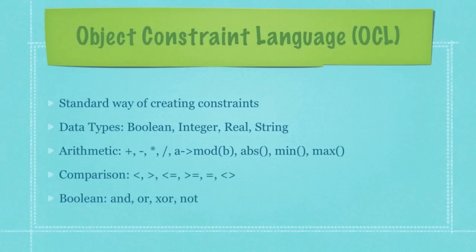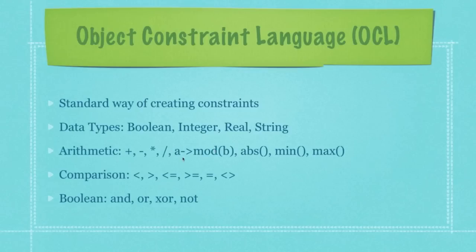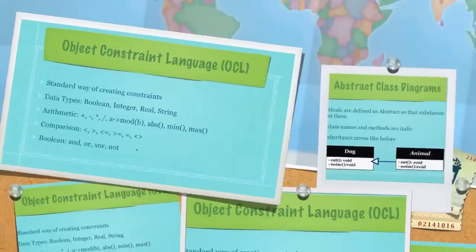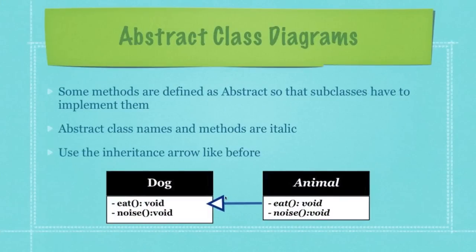These constraints can be defined using basic programming notation or through Object Constraint Language, OCL. When using OCL, all data types are defined as either Boolean, Integer, Real — meaning numbers with decimal places — or String. Common arithmetic operators are supported, including modulus, which gives the remainder after division, as well as min, max, comparison operators (less than, greater than, equal to, not equal to), and Boolean operators: and, or, xor, and not.